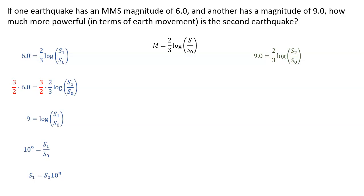We'll take that magnitude of 9 and plug it in for M, and then do the same solving process we did in the last one. And we end up with the earth movement here, s2, is the baseline s0 times 10 to the 13.5.